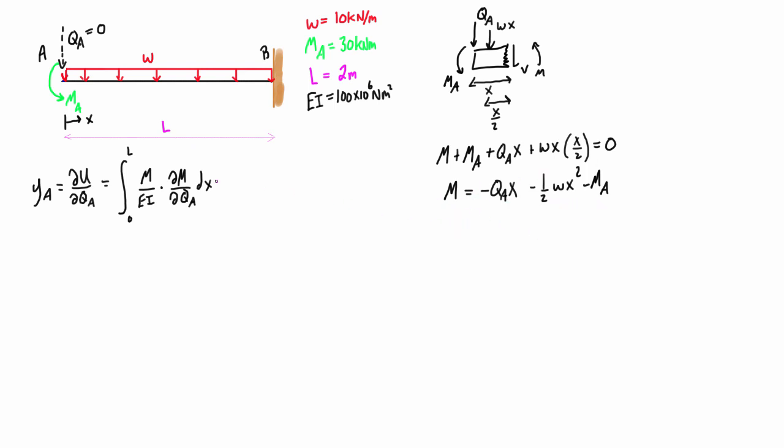What we also want is the partial derivative of this expression with respect to QA, so we write delta M with delta QA. What we do is when we take the partial derivative, basically we set QA to the variable and everything else to constants.